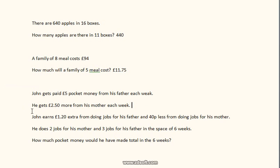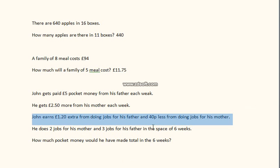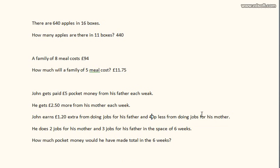Now we're at £75 — keep that in mind. John earns £1.20 extra from doing jobs for his father and 40p less from doing jobs for his mother. So if he gets £1.20 from his father and 40p less from his mother, that means £1.20 take away 40p — that's 80p from his mother. He does 3 jobs for his father, so 3 lots of £1.20 is £3.60.